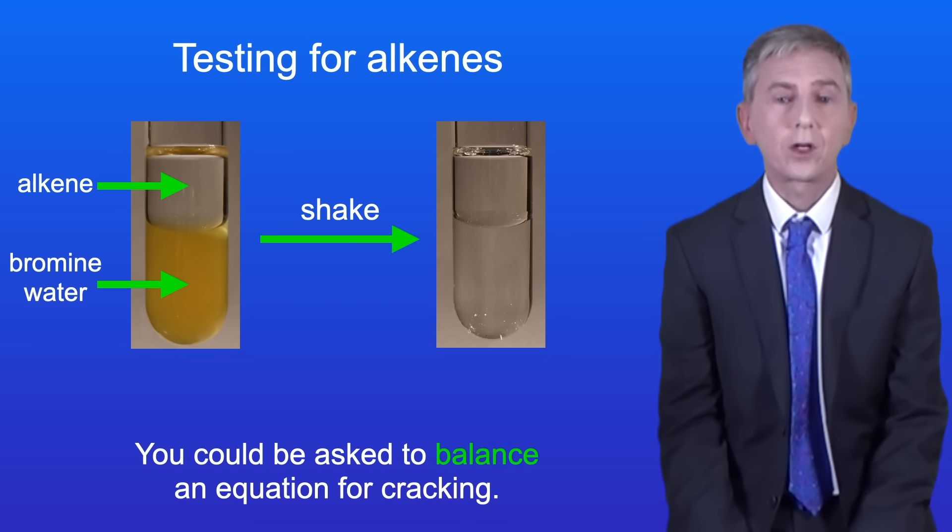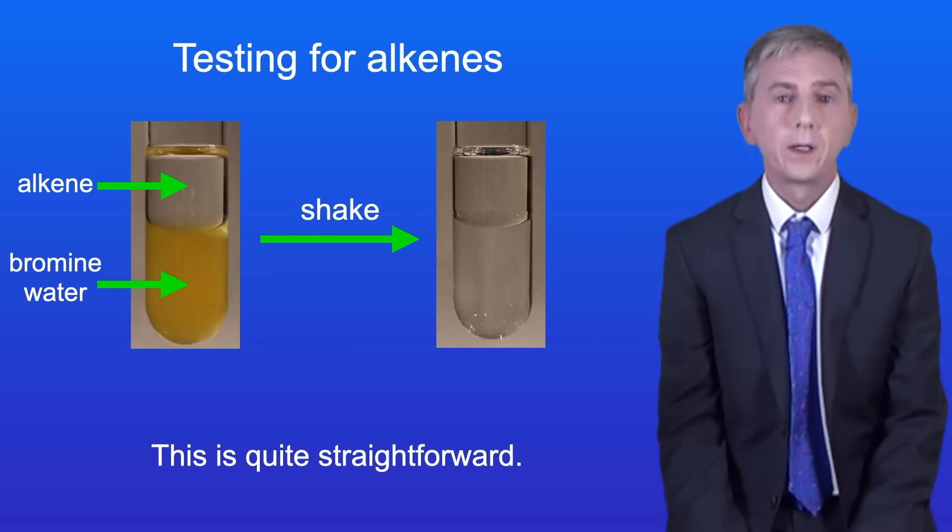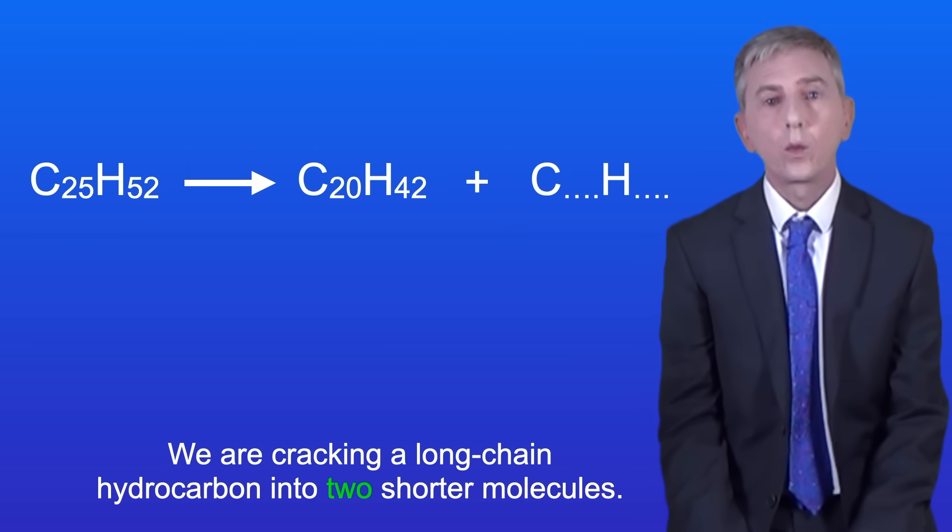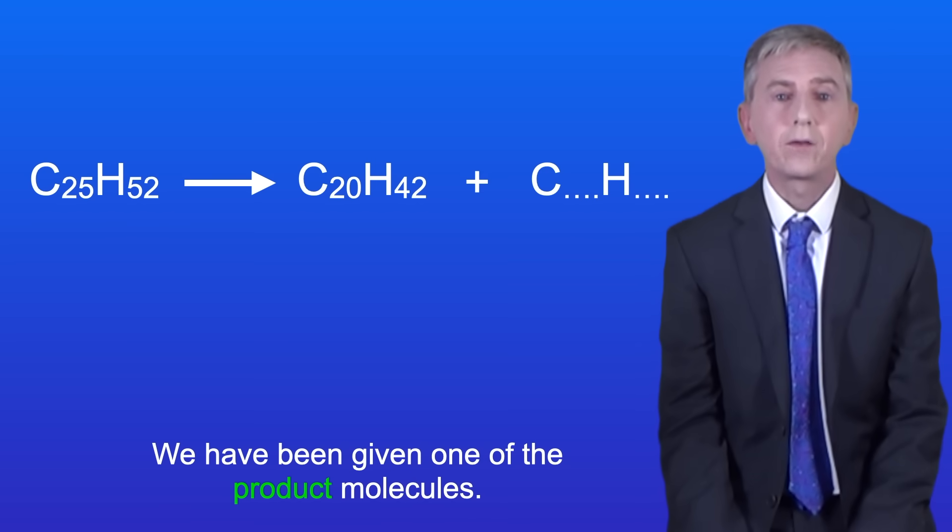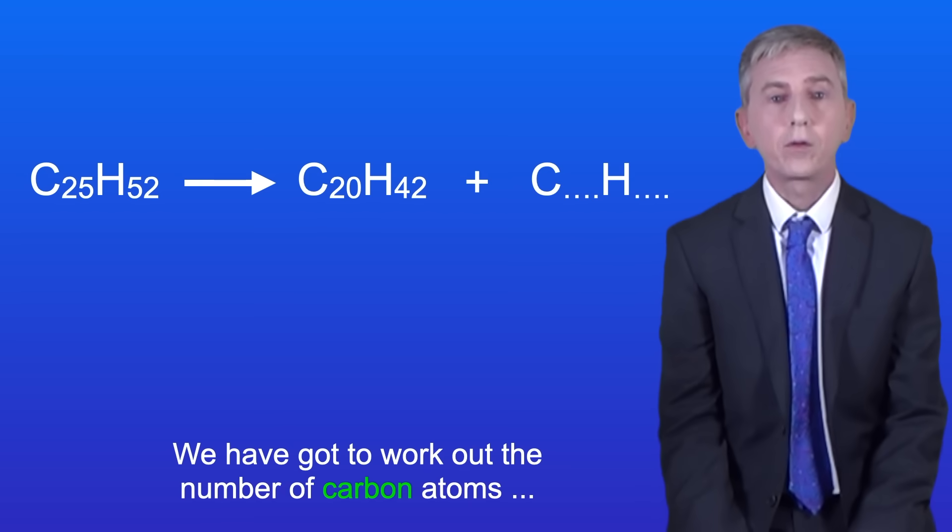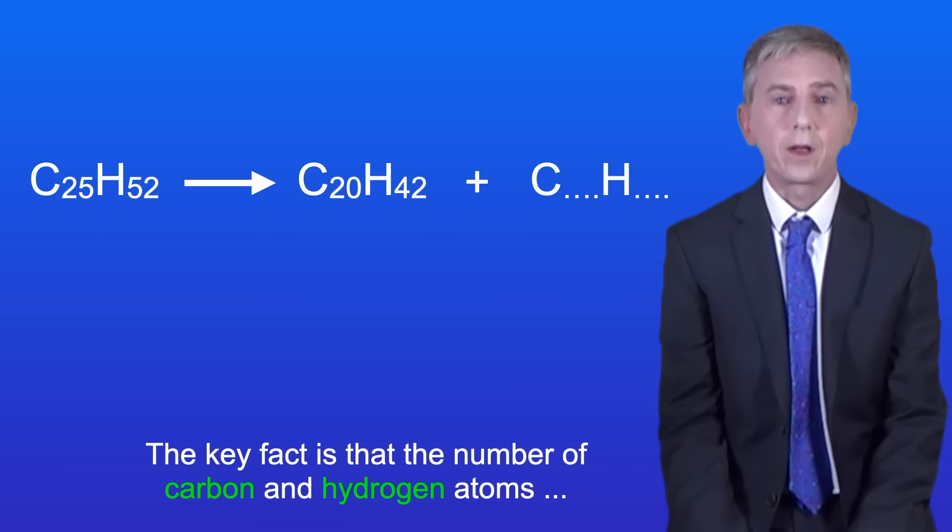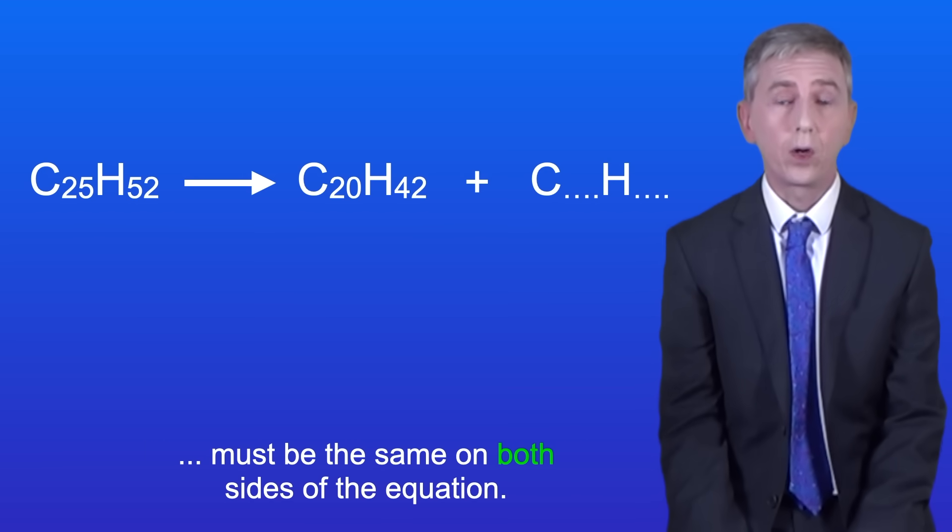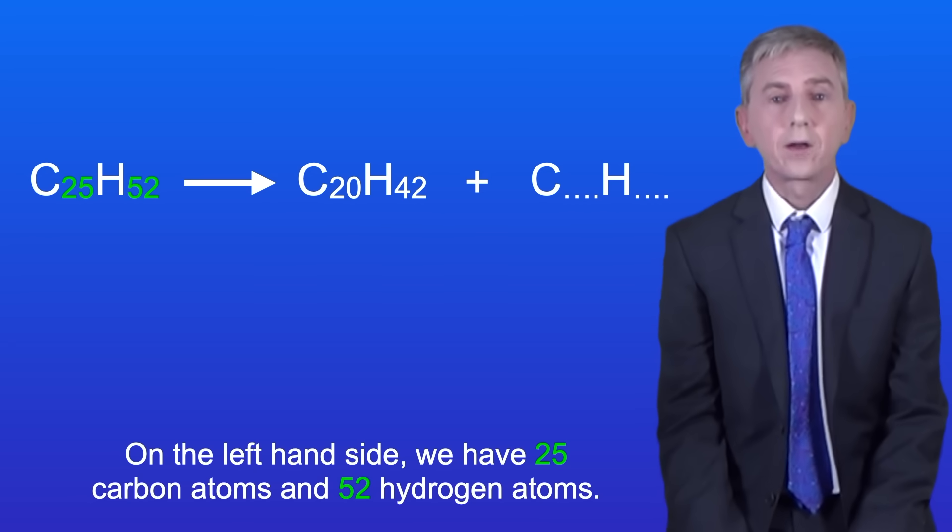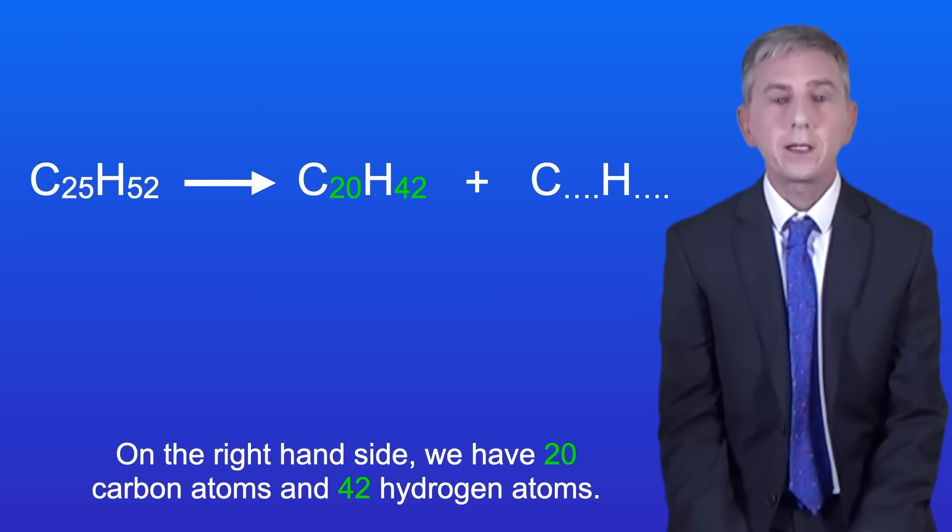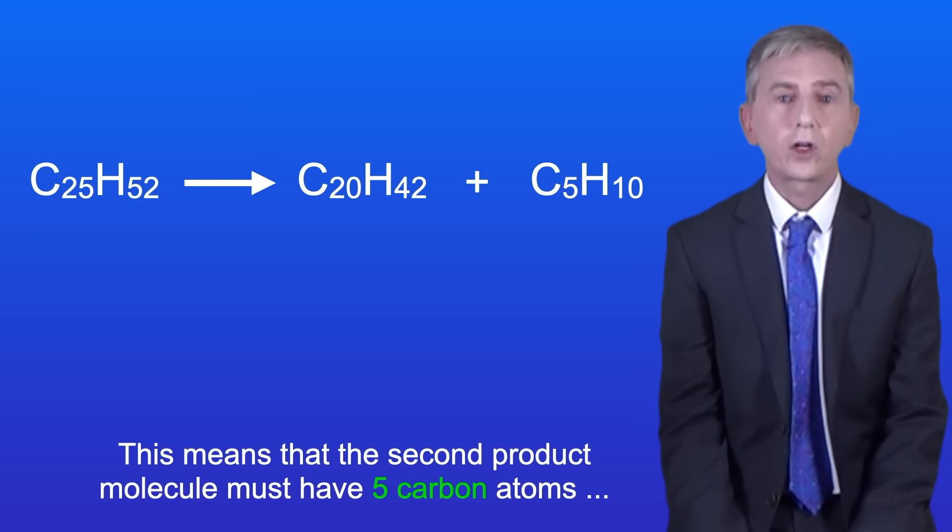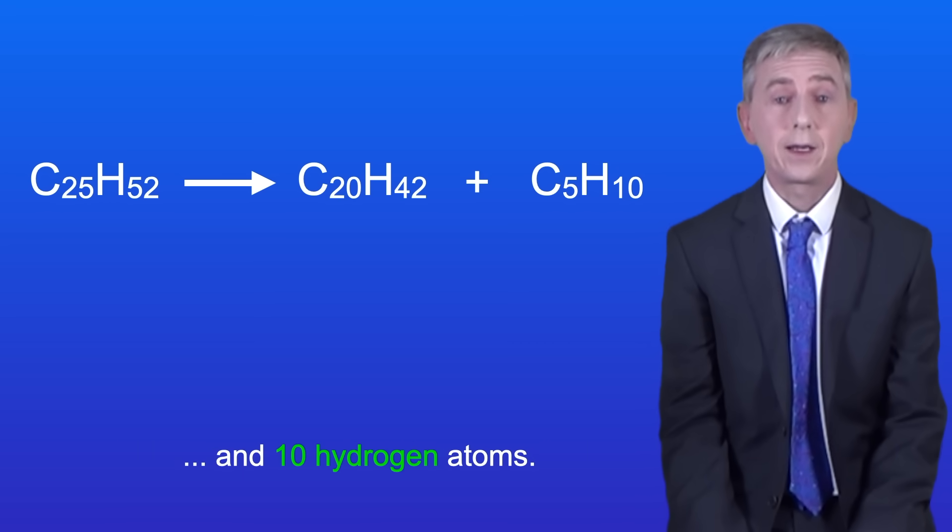Okay now you could be asked to balance an equation for cracking. This is quite straightforward. I'm showing you a cracking equation here. We're cracking a long chain hydrocarbon into two shorter molecules. We've been given one of the product molecules and we've got to work out the number of carbon atoms and hydrogen atoms in the other product molecule. Now the key fact is that the number of carbon and hydrogen atoms must be the same on both sides of the equation. On the left hand side we've got 25 carbon atoms and 52 hydrogen atoms. On the right hand side we've got 20 carbon atoms and 42 hydrogen atoms. This means that the second product molecule must have 5 carbon atoms and 10 hydrogen atoms.